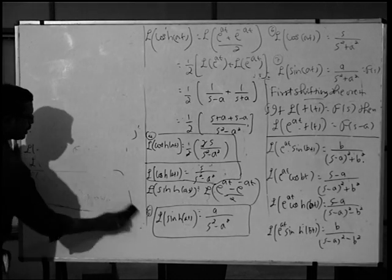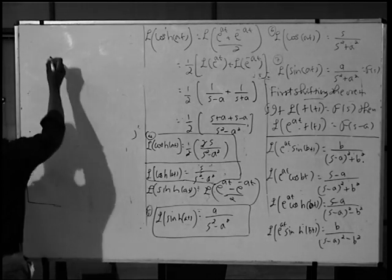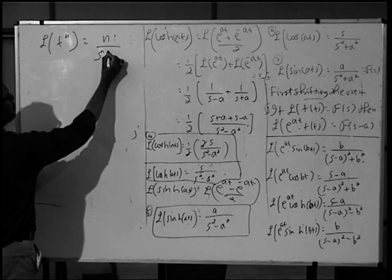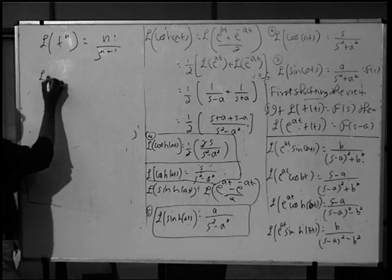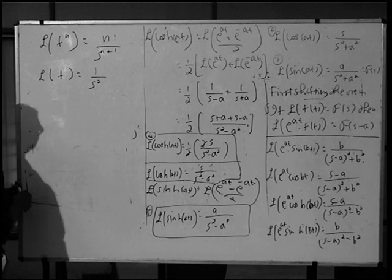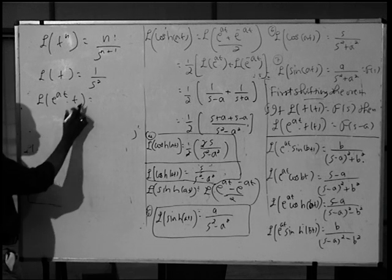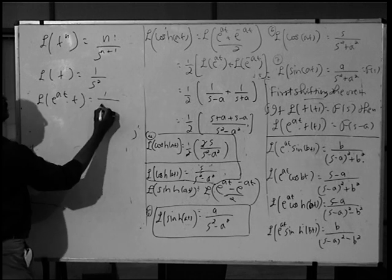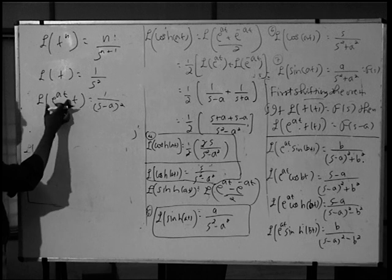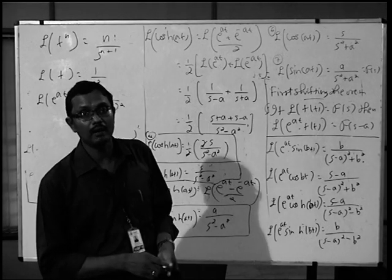In general, applying the First Shifting Theorem gives the Laplace transform of a function multiplied by an exponential, provided the Laplace transform of that function exists. One more formula: Laplace transform of t raised to n equals n factorial divided by s raised to n plus 1. If you substitute n equal to 1, Laplace transform of t equals 1/s², which is consistent with formula number 2. We can also apply the first shifting theorem to find L{e^(at)·t^n} by replacing s by (s minus a), giving 1/(s minus a)². In the next class we will discuss inverse Laplace transform. Thank you.